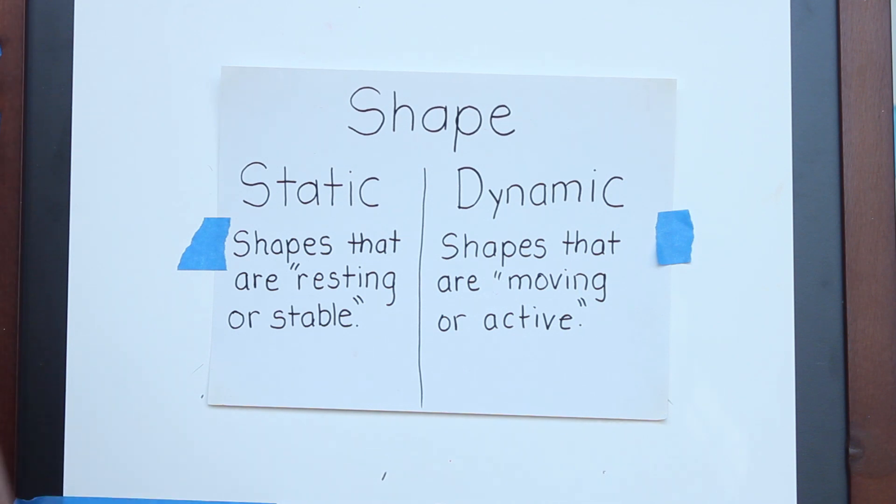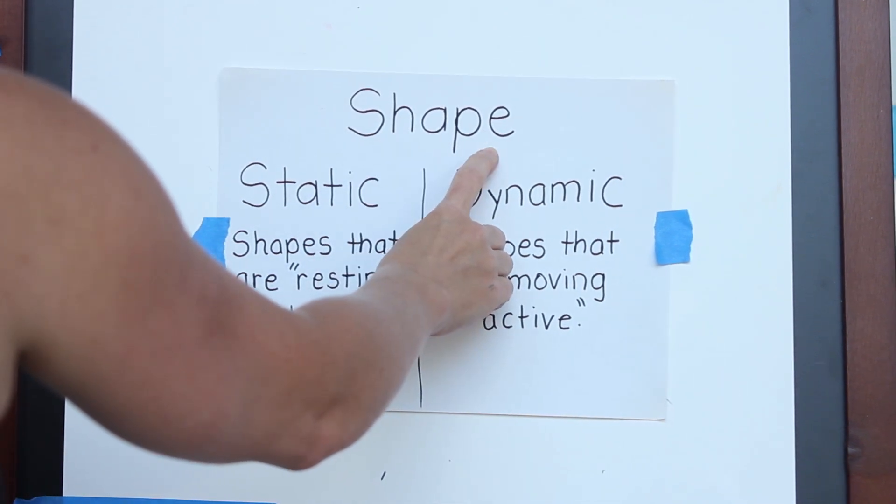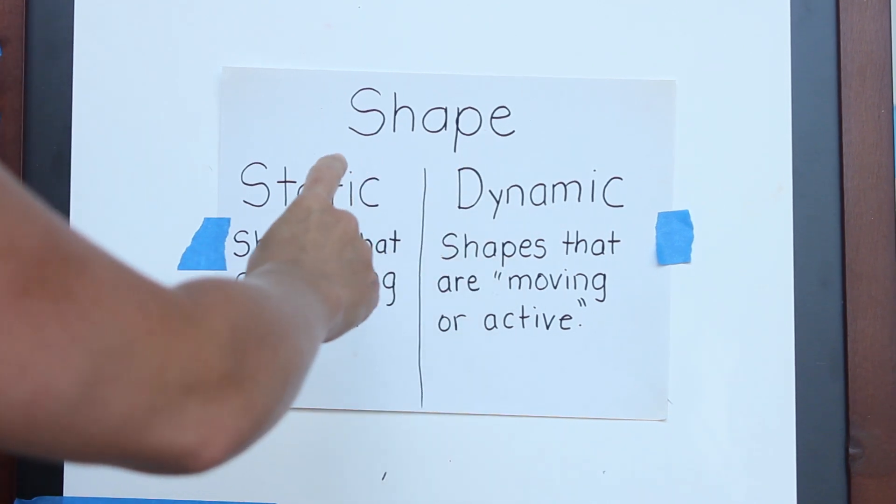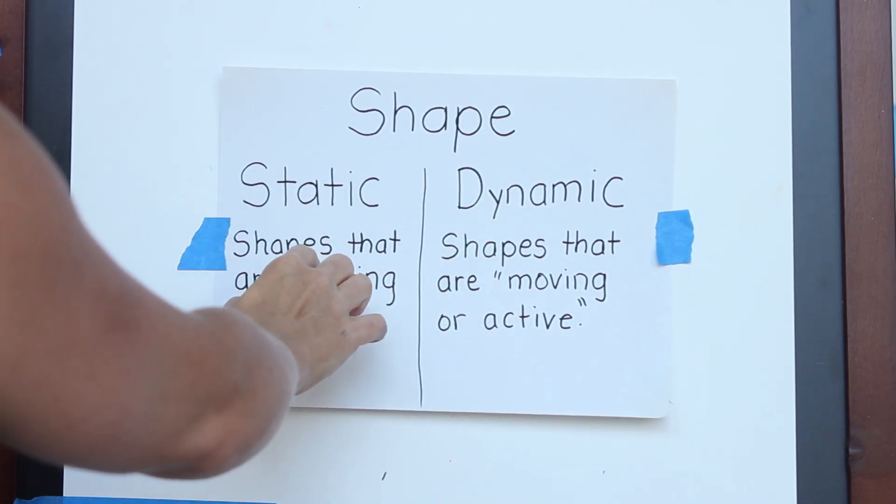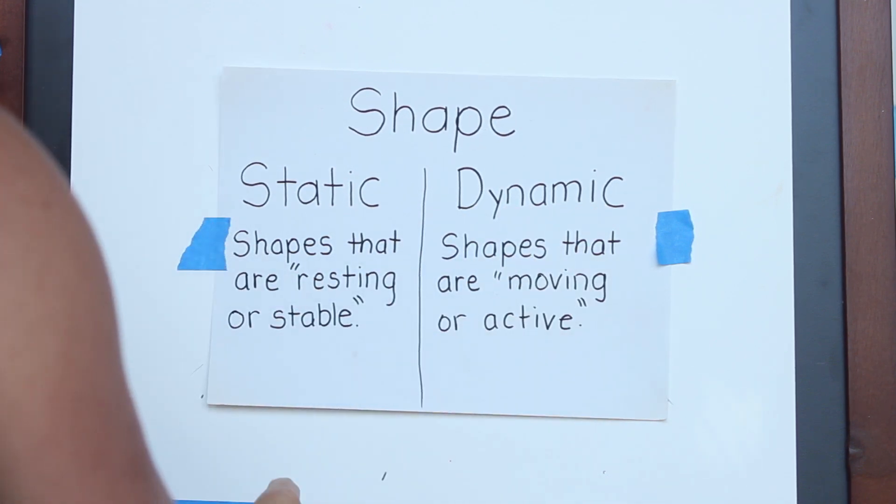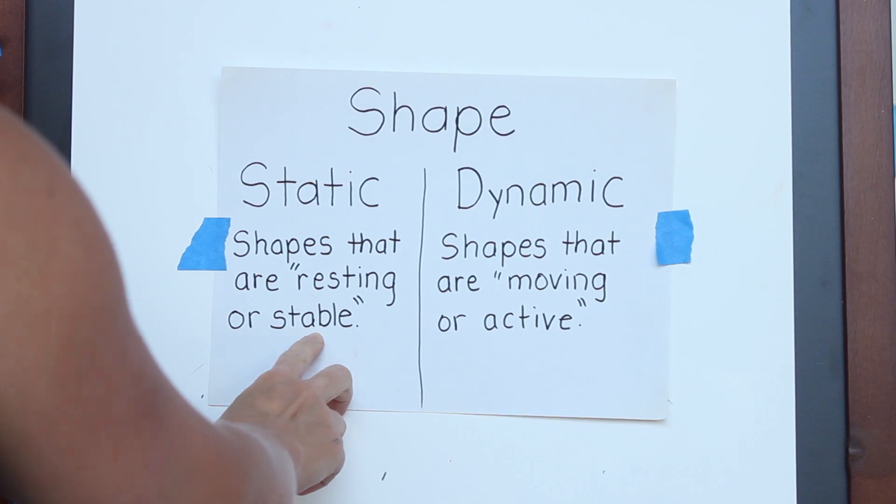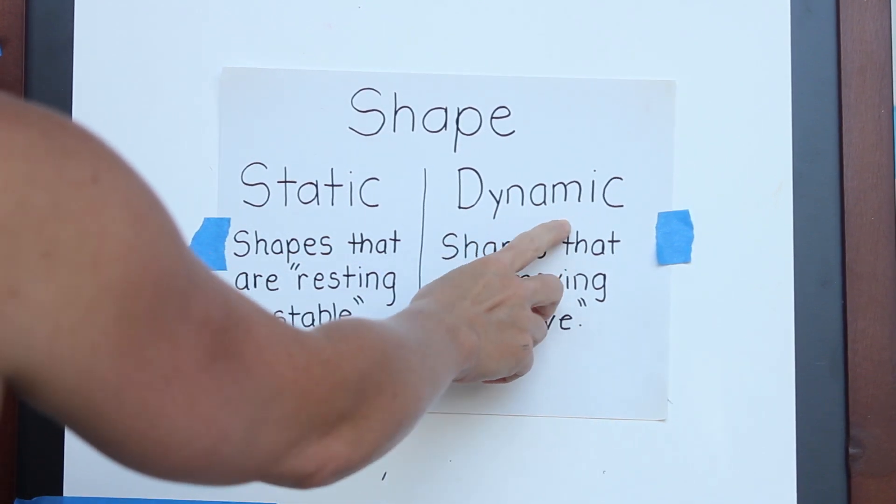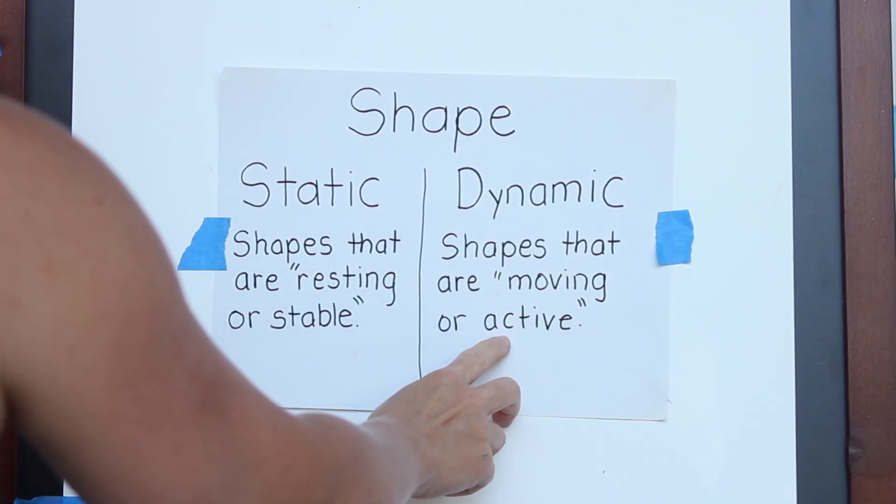This lesson is for my middle school students. We're going to be focusing on shape this week and we're going to be looking at static shape and dynamic shape. Static shapes are shapes that seem like they're resting or stable, and dynamic shapes are shapes that are moving or active.